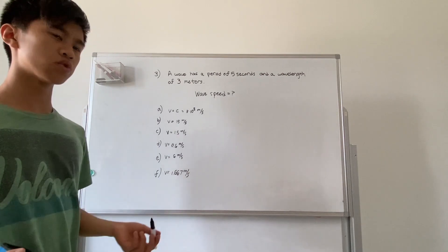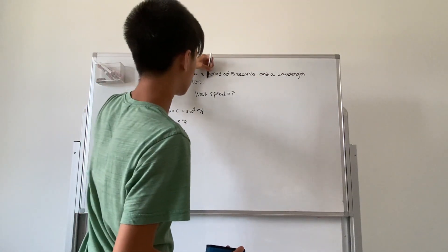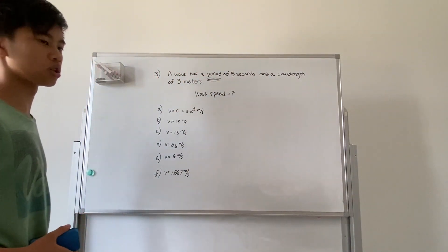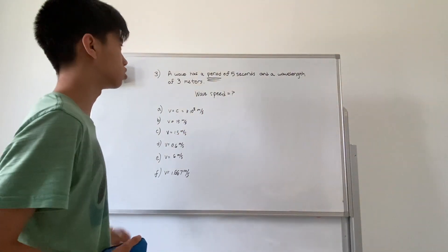This problem is rather simple actually, it just has a trick inside it. They gave you the period instead of the frequency. If you're just starting out you might make the mistake of multiplying the period with the wavelength. Do not do that.